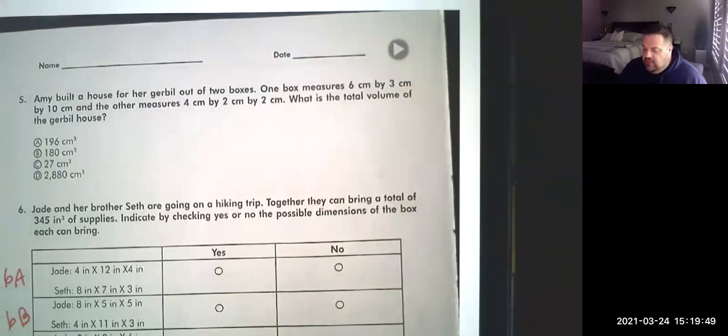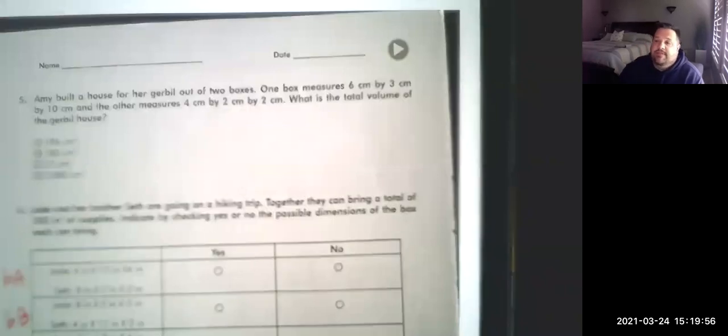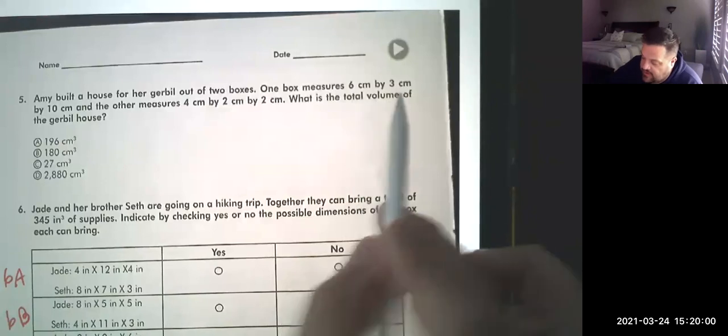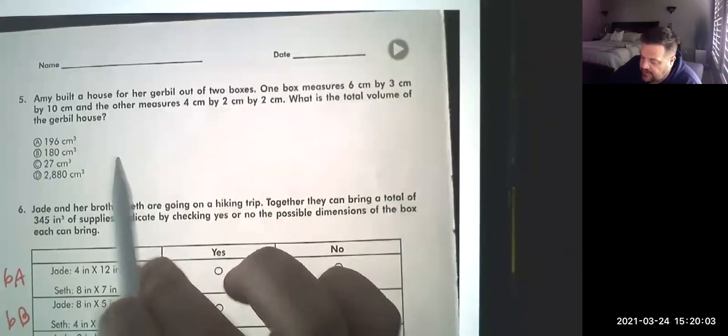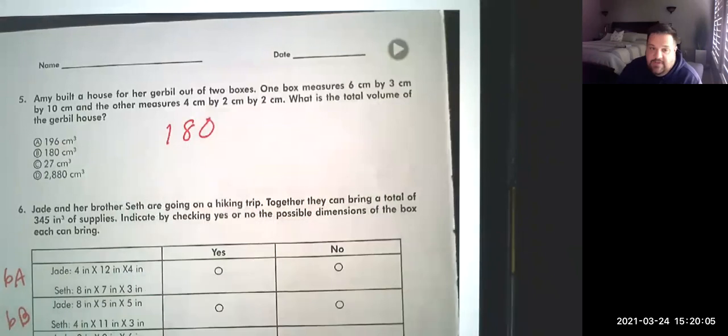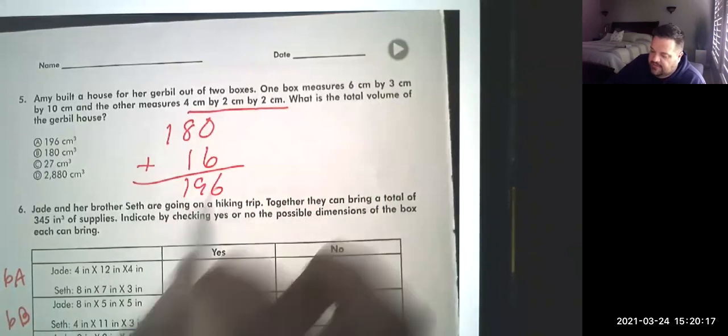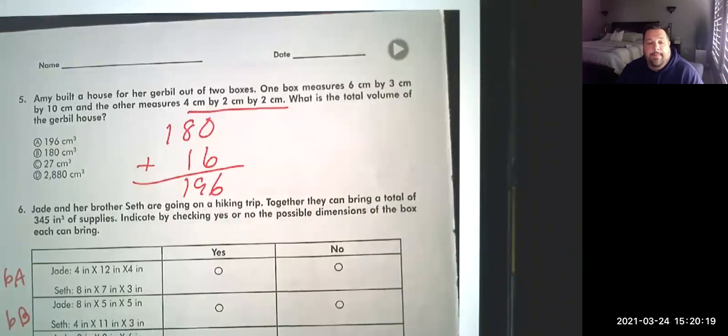So Amy had two boxes to build her gerbil house. They gave her both the measurements, the total volume that she built this up. You just have to figure out both of them. So the volume of one box was 6 times 3 times 10, which is 18 times 10 is 180 for the first box. And then the second box was 4 by 2 by 2, which is 4 times 2 is 8, 8 times 2 is 16. Add those together and you got 196, which is A.